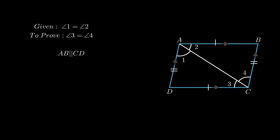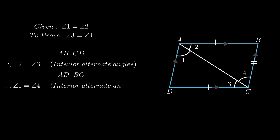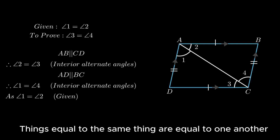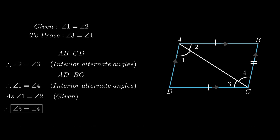Since AB is parallel to CD, angle 2 = angle 3 as interior alternate angles are equal. Also, since AD is parallel to BC, angle 1 = angle 4 as interior alternate angles are equal. As angle 1 = angle 2 (given), by the axiom that things equal to the same thing are equal to one another, we conclude angle 3 = angle 4. Hence diagonal AC bisects angle C.